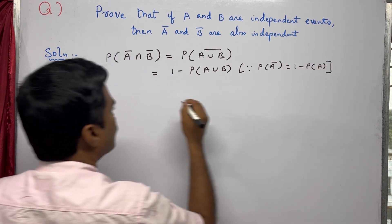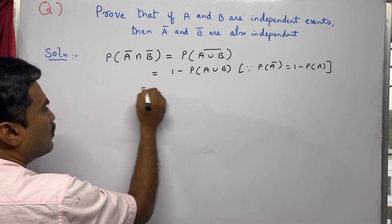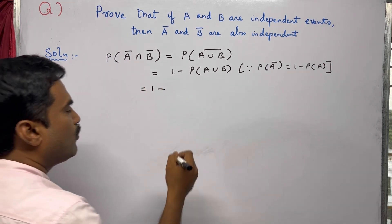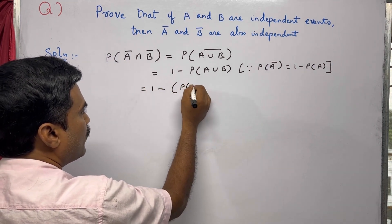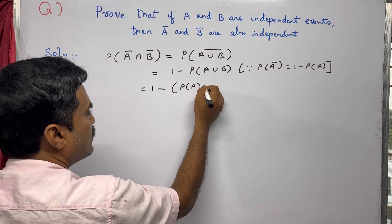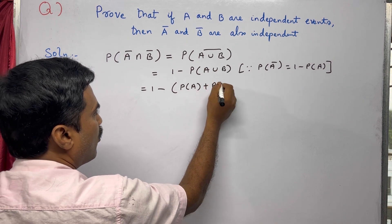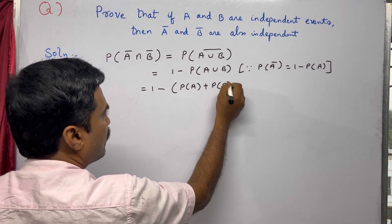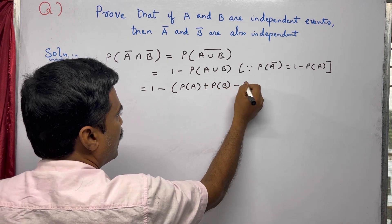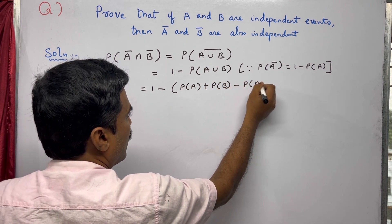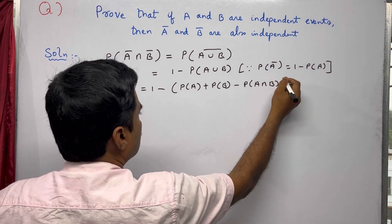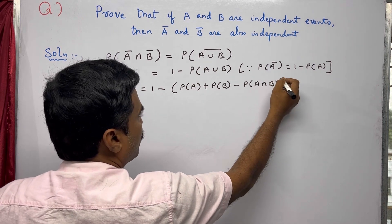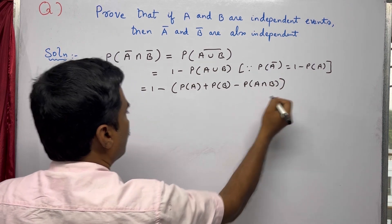Now apply the formula for P(A ∪ B), which is P(A) + P(B) − P(A ∩ B). So we have 1 minus [P(A) + P(B) − P(A ∩ B)].